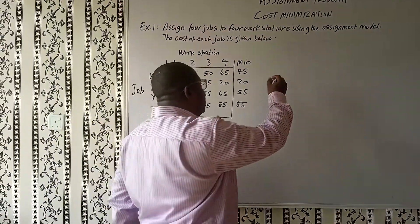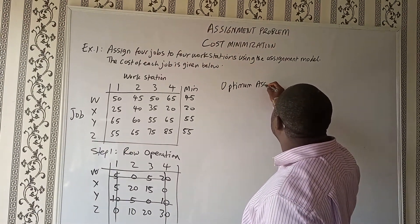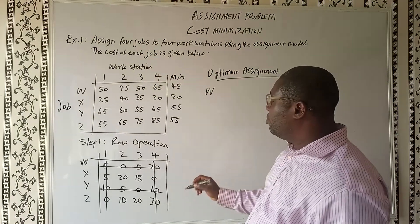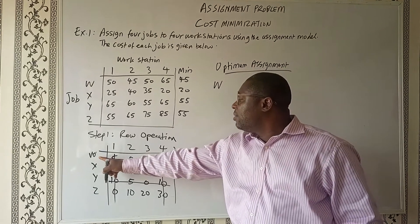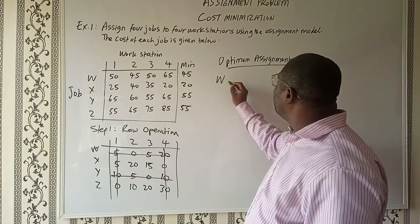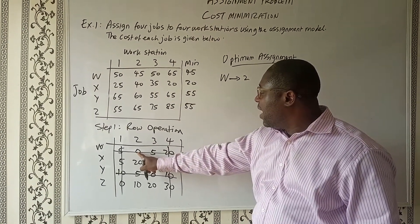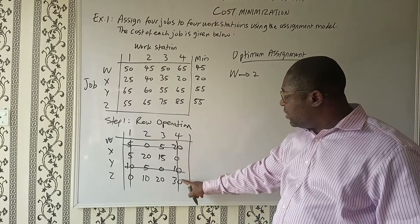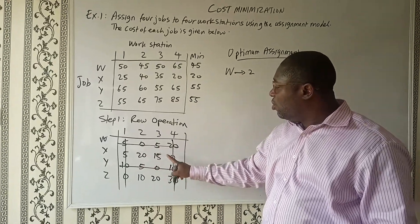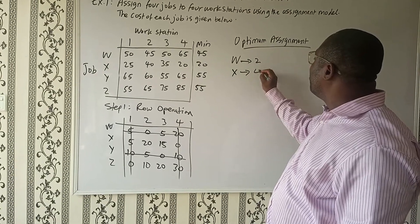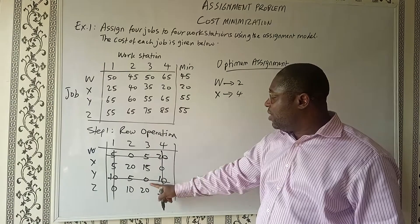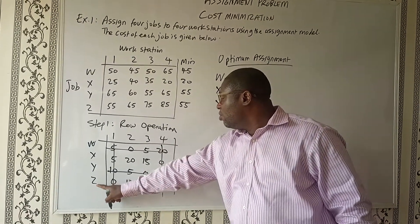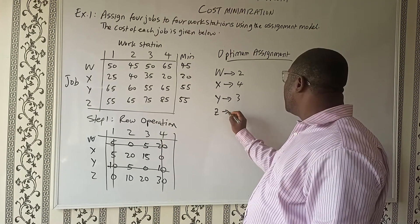Now we simply assign. W is assigned to workstation 2 because it has a zero there — just one zero. X is assigned to workstation 4, with no competing zeros. Y is assigned to workstation 3, no competing zeros. Z is assigned to workstation 1. So the optimal assignments are W→2, X→4, Y→3, and Z→1.